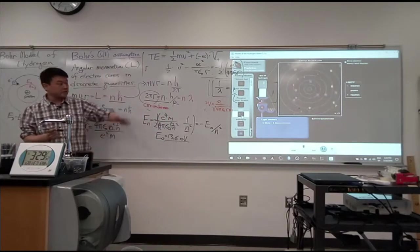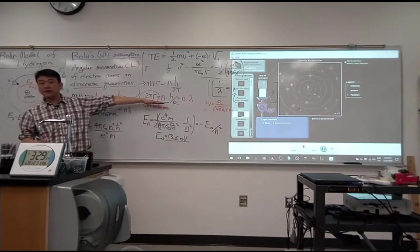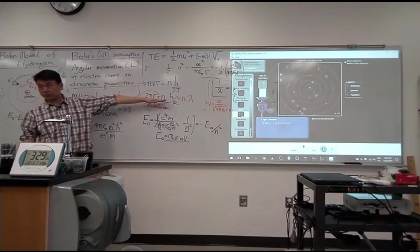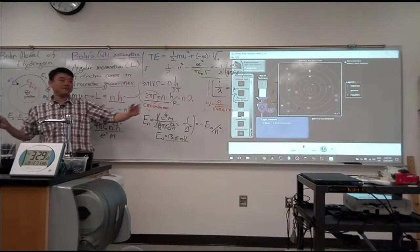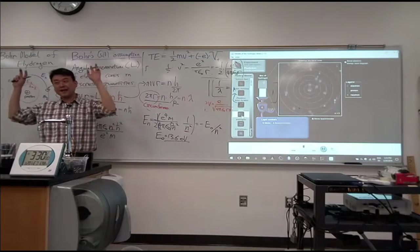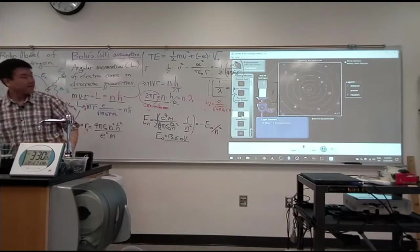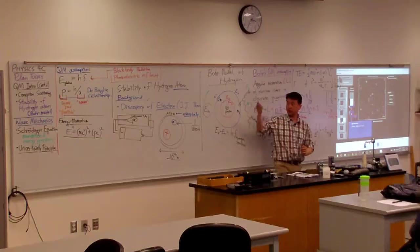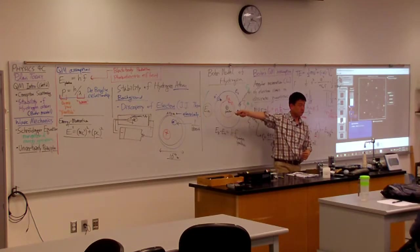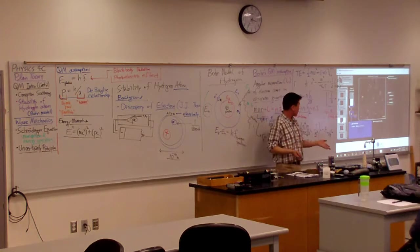And if you wanted to justify this somehow, as in, like, why should this be true? One way to say this, oh, this must be true, because electron must be in standing wave. If that's what you're saying, then that leads you into de Broglie relationship. Or you can take it the other way.